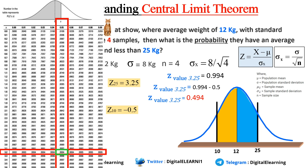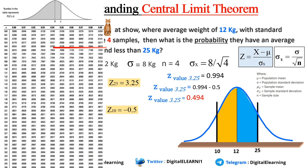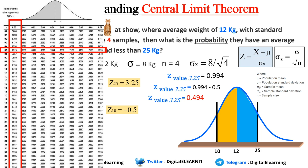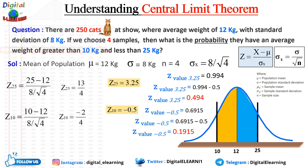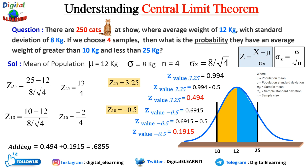For z at minus 0.5, we look up 0.5 in the z-table and get 0.6915. Since the area under the curve is 1 and half is 0.5, we subtract to get 0.1915. Adding both values together gives 0.6855, meaning the probability that the average weight is between 10 and 25 kg is approximately 68.55 percent.